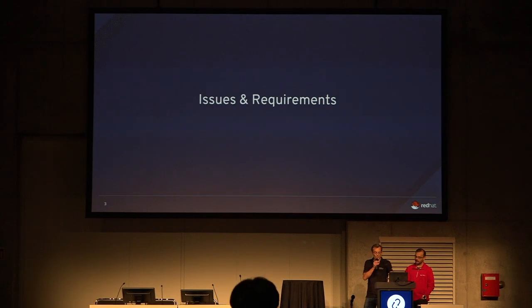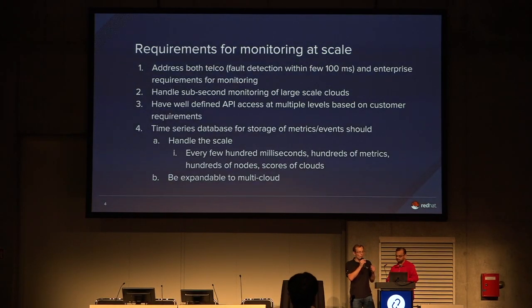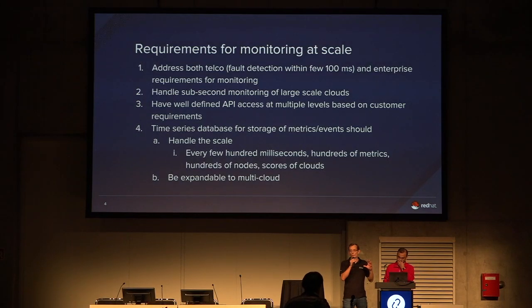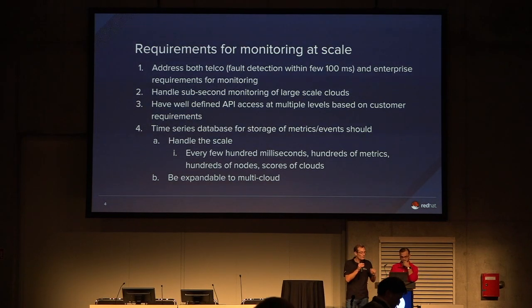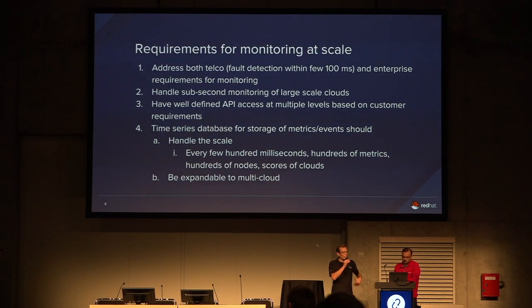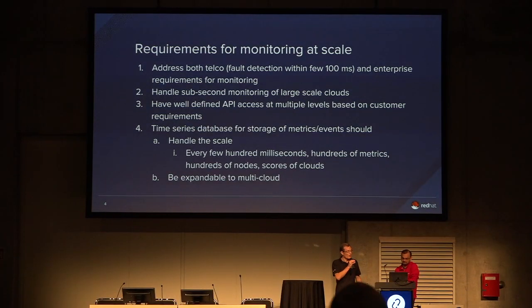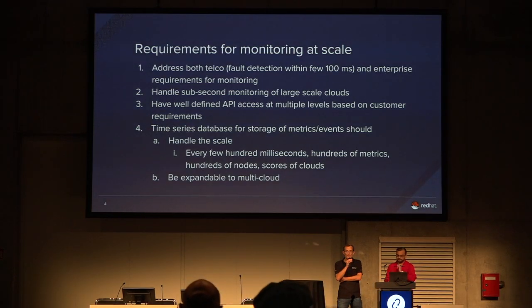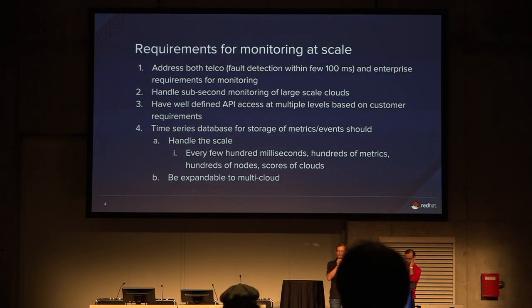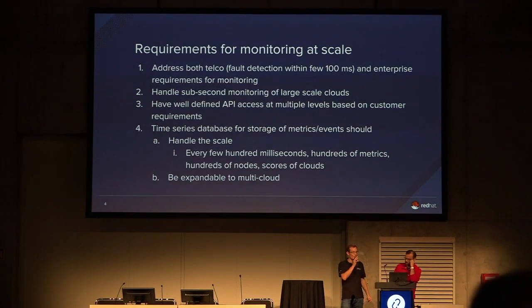Thanks. So first, what do we want to achieve? The goal is to monitor our OpenStack cluster at scale, complying with a fault detection time of a few hundred milliseconds, and ideally even less for telco and enterprise. We want a well-defined API at multiple levels — that is very important — to handle this requirement. We need a time series database to store metric events, and it must handle the scale and the pace: a lot of events per second. This has to scale.